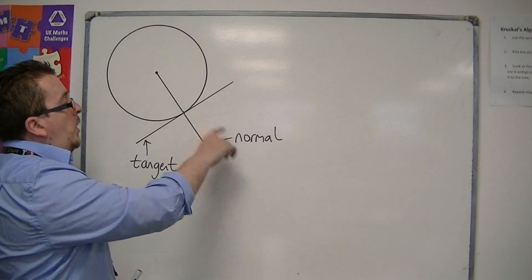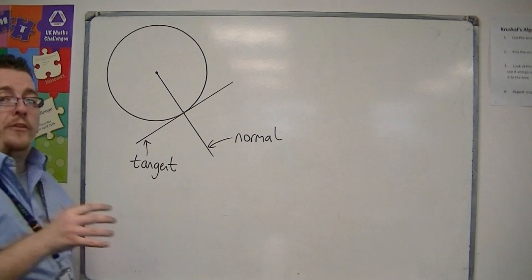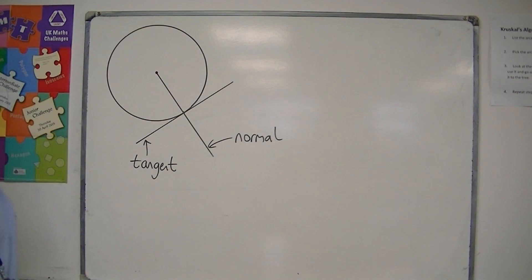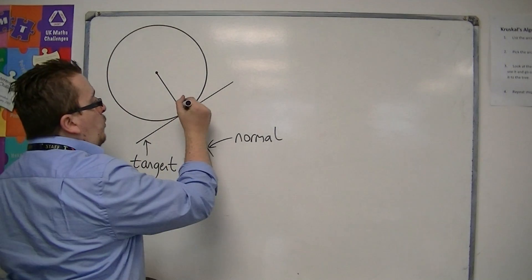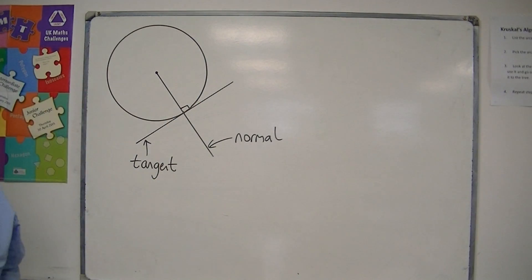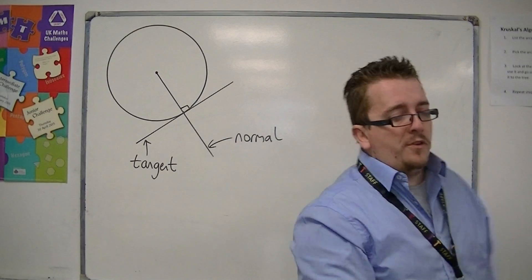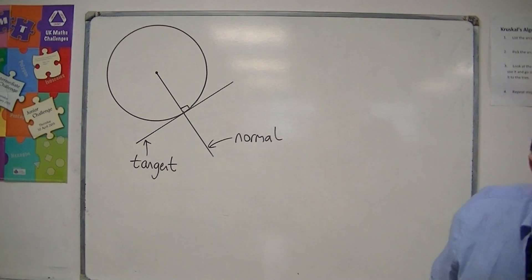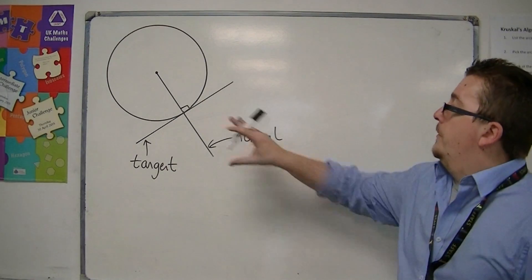Normals to a circle always pass through the centre of the circle. They are always also at right angles to the tangent at that point, so the normal is defined as the perpendicular line to the tangent.